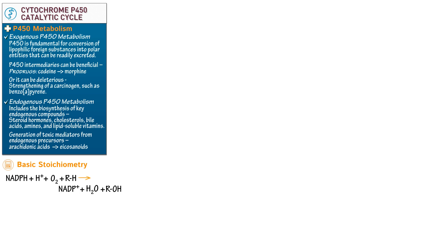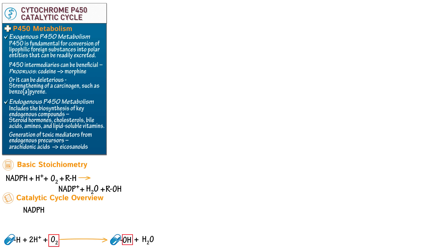Let's also generate a shorthand version of the major steps of the catalytic cycle. The key reactants are the drug with a carbon-hydrogen bond, two protons, and molecular oxygen. The products are the drug with a hydroxyl group and water. NADPH is oxidized to NADP+ via P450 reductase, which transfers electrons to the P450 enzyme. Electron transfer occurs two times during the catalytic cycle, and one of these transfers can occur via cytochrome B5 rather than NADPH reductase.